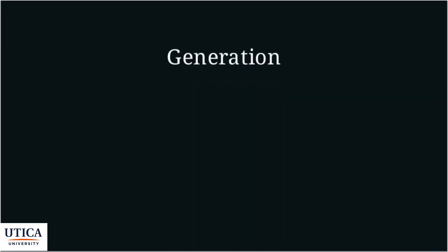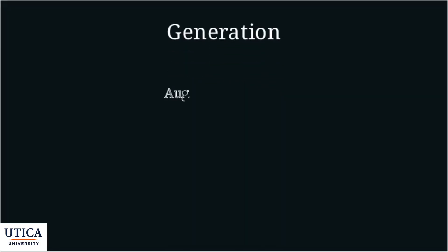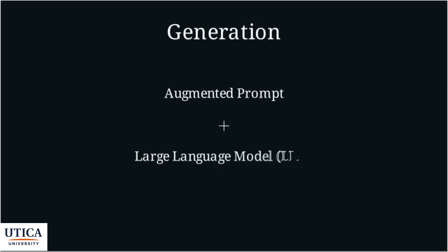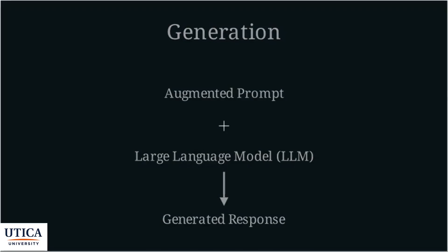Finally, the augmented prompt is fed into the large language model. Because the prompt now contains relevant context, the LLM can generate a more accurate, informed, and helpful response. The LLM is no longer relying solely on its pre-trained knowledge — it's using external information to provide a better answer.